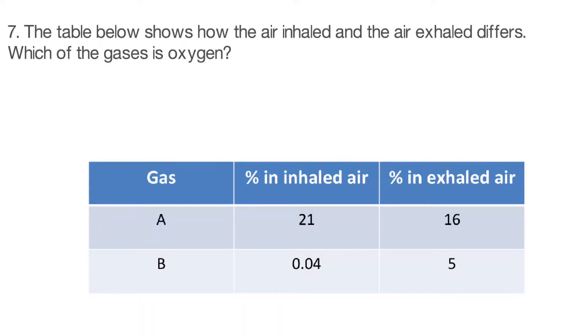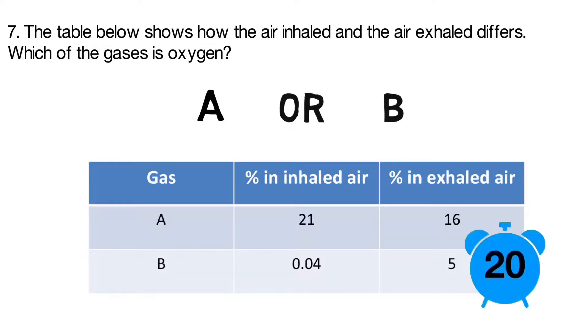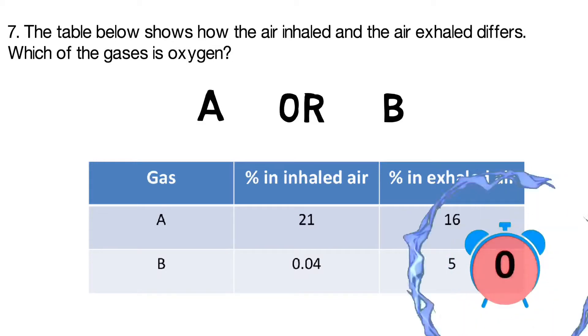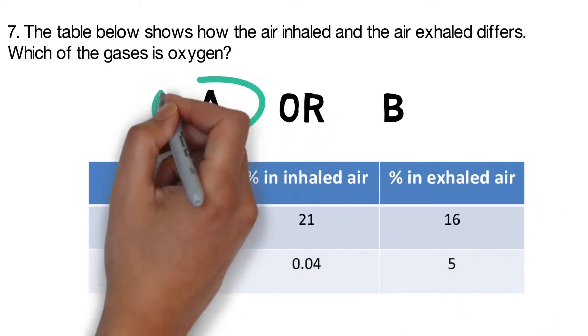Question seven: the table below shows how the air inhaled and the air exhaled differs. Which of the gases is oxygen? Is it gas A or gas B? The correct answer is gas A.